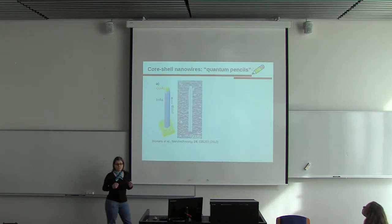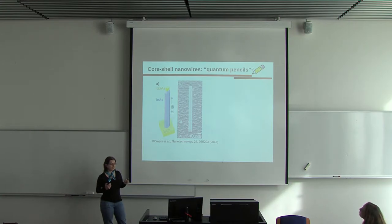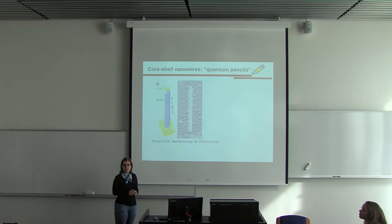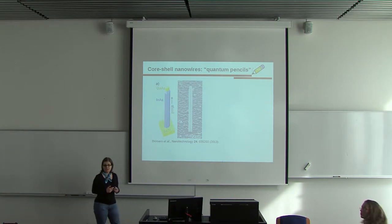Nowadays, it's become feasible to grow much more complicated semiconductor structures. One of the examples are core-shell nanowires, which look like pencils, and that's why sometimes they are called quantum pencils.